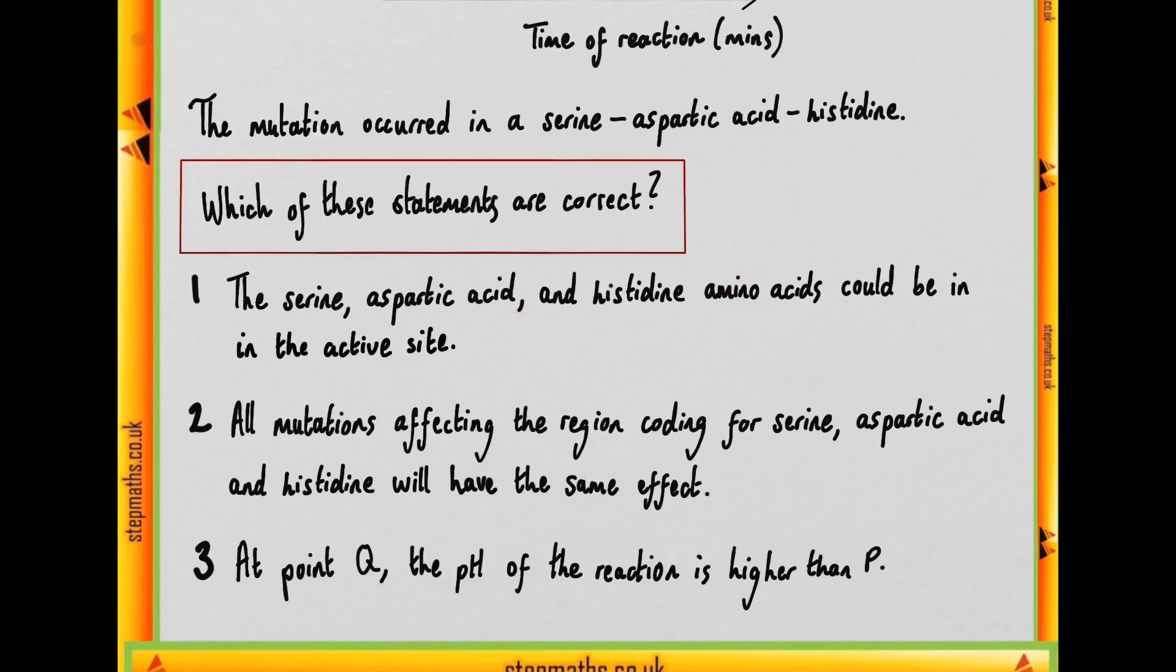But of course there are a number of other reasons why a mutation in a particular region of a protein could have an impact that doesn't involve it being in the active site. For example, this could be at another region in the protein, but the mutation may affect the three dimensional structure such that the active site ends up being changed as well. But it could be in the active site, so we'll give that a tick.